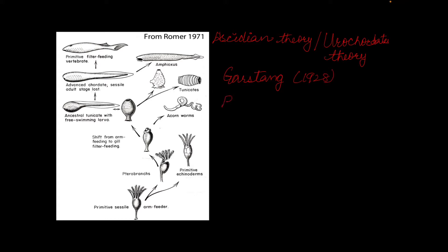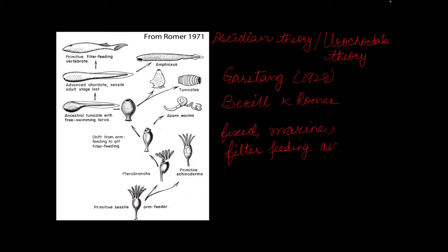This theory was given by Garstang in 1928 and later supported by Berrill and Romer. According to this theory, chordates evolved from some fixed, marine, and filter-feeding ascidians — ascidians meaning urochordates. This ancestral stalk was sessile and an arm feeder.